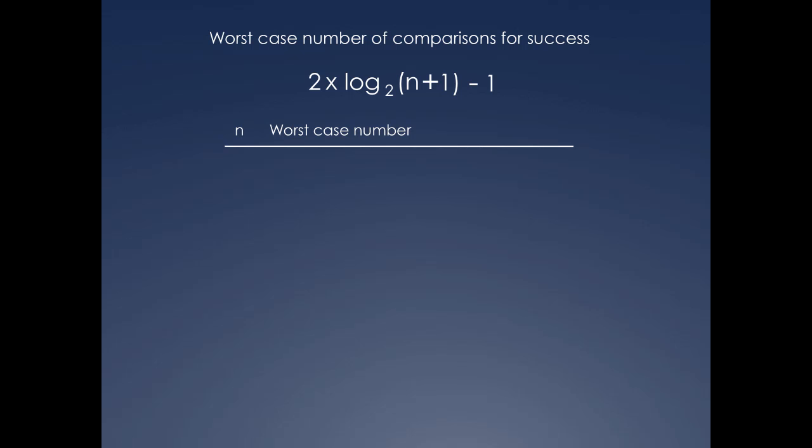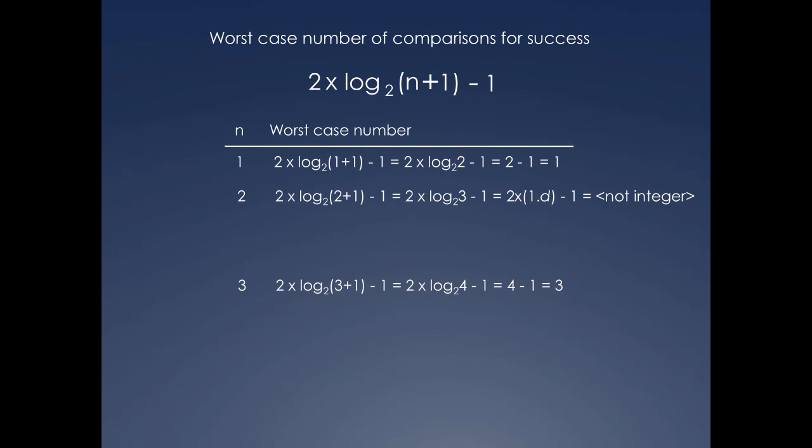Let's find out by taking an array of size 2. If we plug n equals 2 into the formula, we end up with a log of 3 to the base 2, which doesn't give an integer. I've used 1.d to show that it's 1.something, it doesn't matter what that something is. This won't work because the number of comparisons must be an integer. For n equals 2, it should be 3, because the comparison tree has two levels.